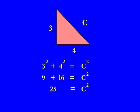Now we need to get just C, so we take the square root of both sides of the equation. The square root of 25 and the square root of C squared. The square root of 25 is simply 5, and the square root of C squared is C. So 5 is equal to C — the hypotenuse has a length of 5 units.